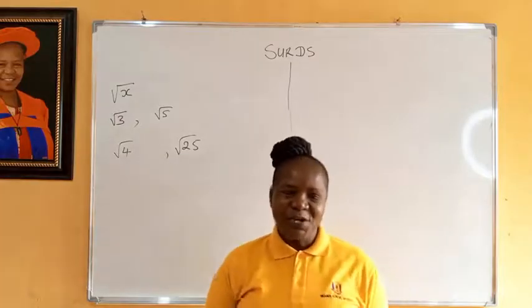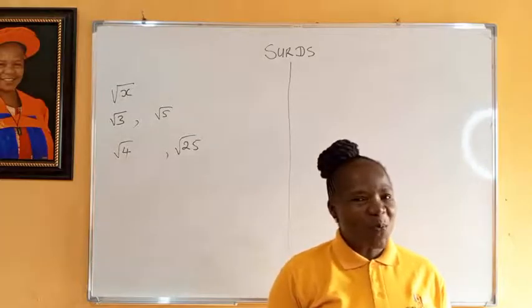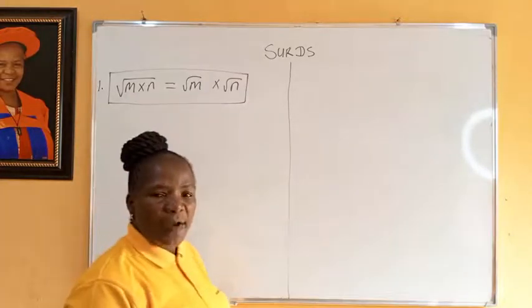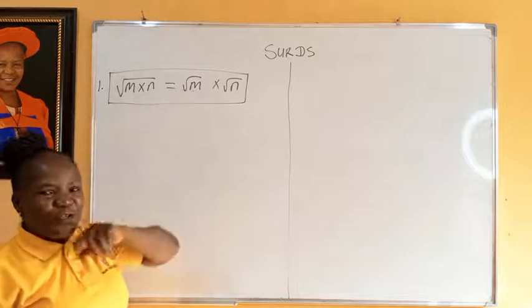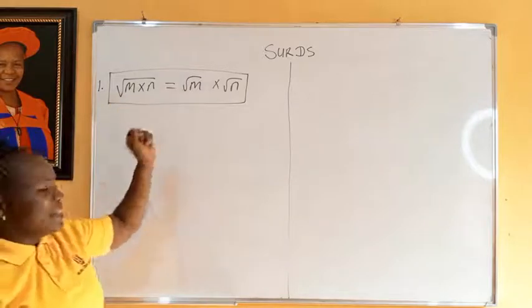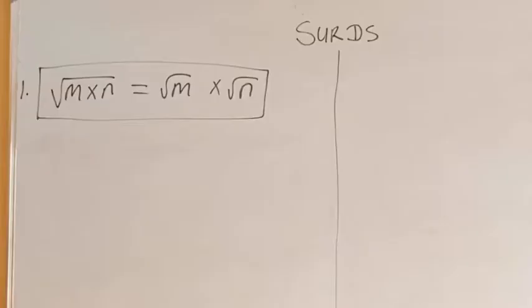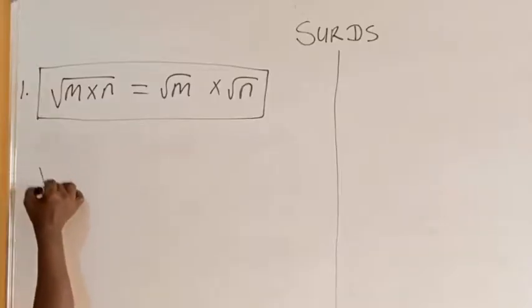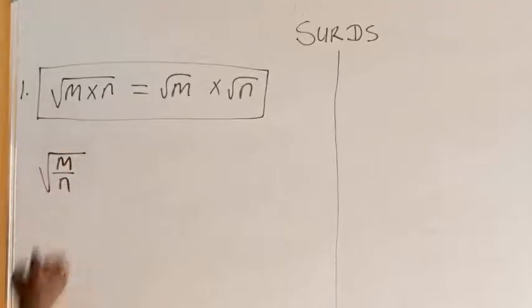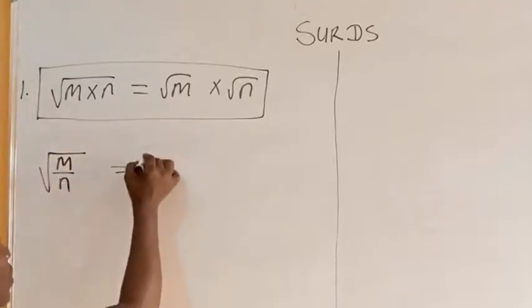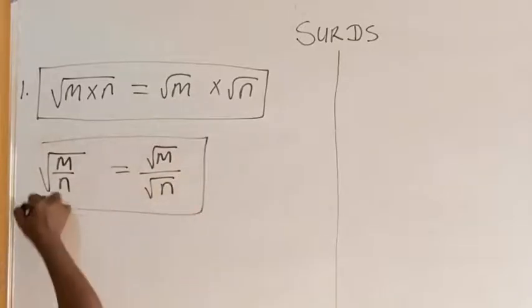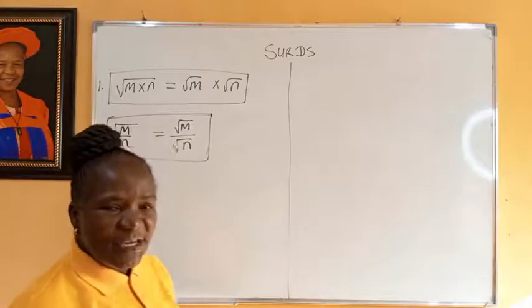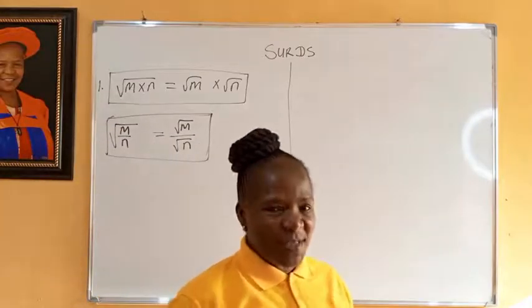So now we are going to look at the rules that guide you when you are operating with surds. One is that the surd of a product is equal to the product of its individual surds: surd of MN is equal to surd M times surd N. We have another one: the surd of a quotient is equal to the quotient of the individual surds.